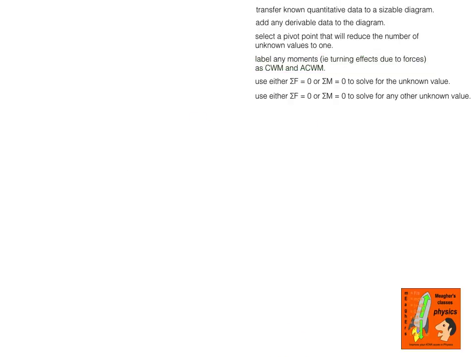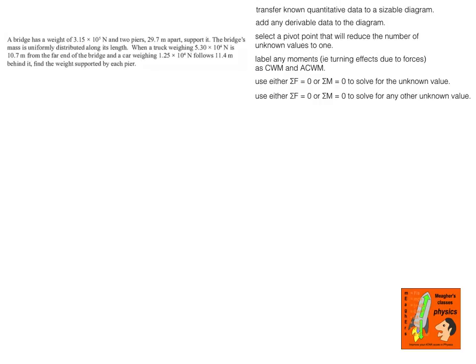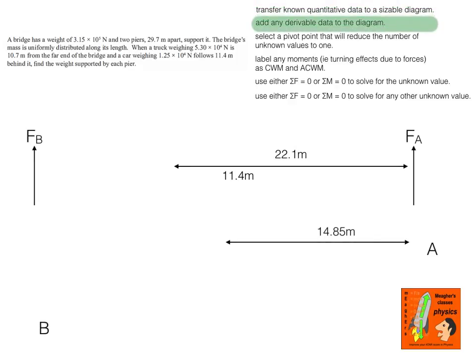Let's look at another very typical question — a bridge with two piers at either end and a couple of vehicles on it. It's a uniform bridge. I've transferred all the data from the question: the weight of the truck, the car, and the bridge, plus the dimensions. As derivable data I've added reaction forces at both piers, labeling the one the truck is traveling towards as A and the other as B. I've also put in the distance of the car from A as 22.1 metres and the centre of mass distance from A as 14.85 metres.